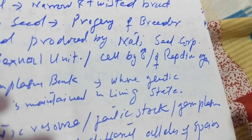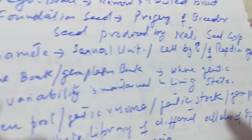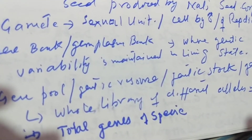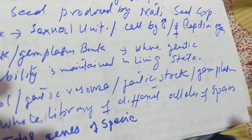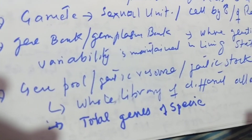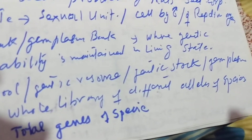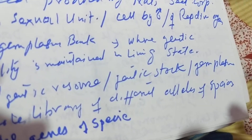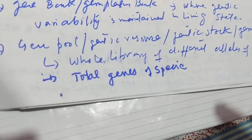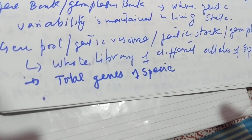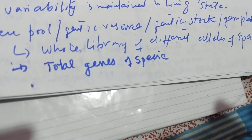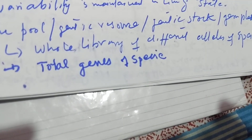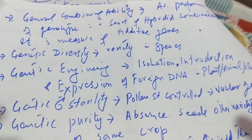Gamete is the sexual unit or cell produced by the male or female reproductive organ. Gene bank or germplasm bank is where genetic variability is maintained in a living state.